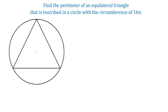In this figure, we have an equilateral triangle inscribed in a circle, and the circumference of this circle is 16 pi units. We need to find the perimeter of this triangle, and the perimeter will be the sum of all three sides.